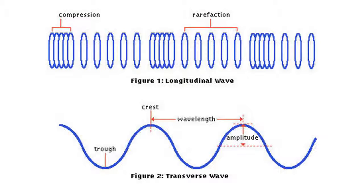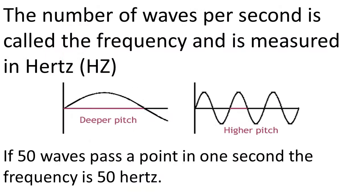Now the number of waves per second, how many waves are being created per second, is called the frequency and is measured in Hertz. So for example, if 50 waves pass a point in one second, that's 50 Hertz. If 10 waves passed in a second, it's 10 Hertz. So that's frequency. The higher the frequency, the higher the pitch. More waves per second means higher pitch.